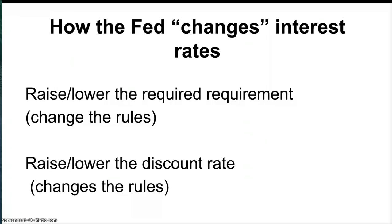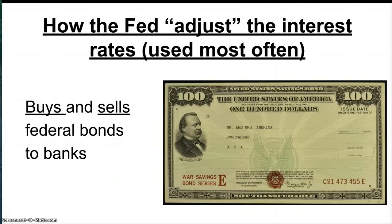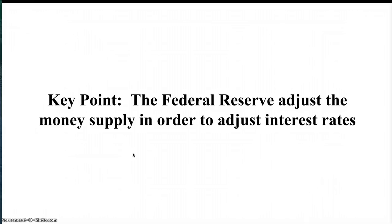What it does most often is adjust the Federal Funds Rate, and it does that through the buying and selling of Federal Bonds — savings bonds. It can either buy or sell these bonds to banks. By buying or selling bonds, the Fed will either add money to the economy or take money out, and that will affect the interest rates that banks offer you and me.